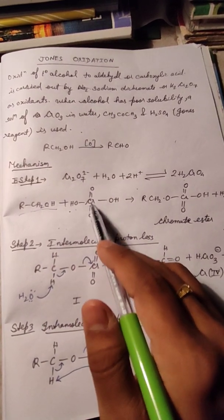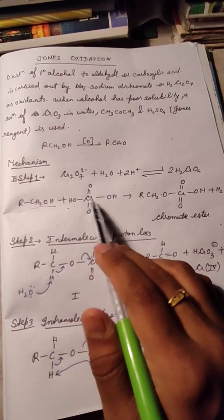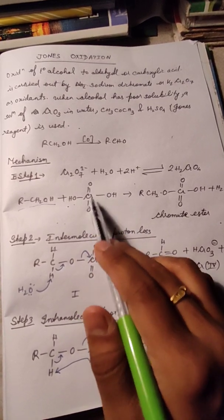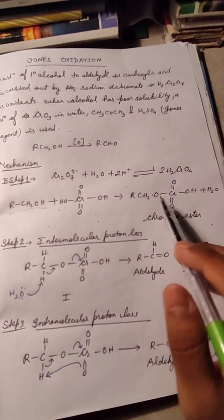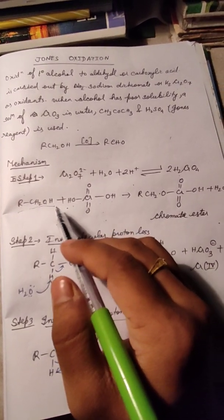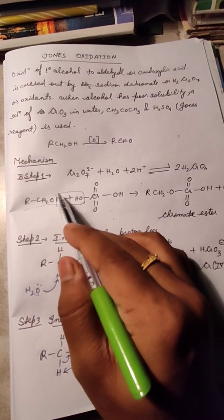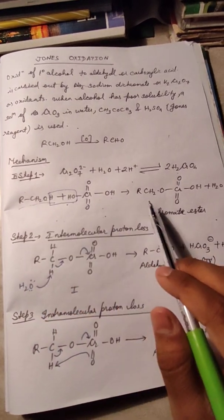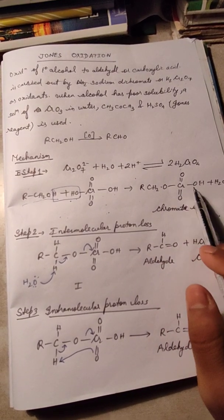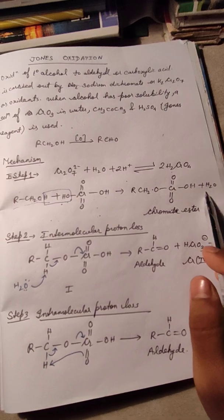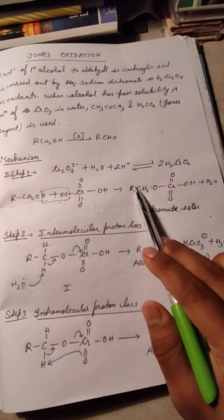This hydrogen chromate structure reacts with the primary alcohol. The primary alcohol — R-CH₂-OH — reacts with H₂CrO₄, and from this reaction one water molecule is released, forming a chromate ester: R-CH₂-O-CrO₃H.